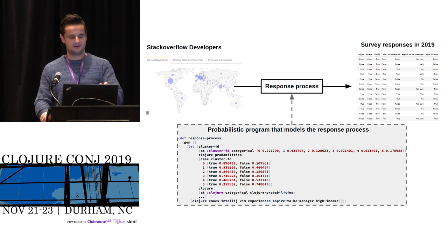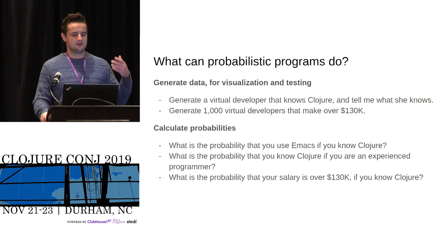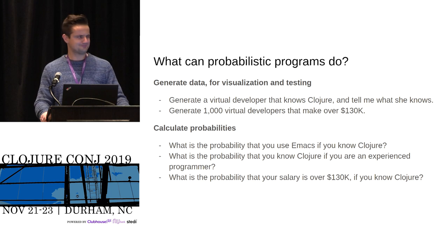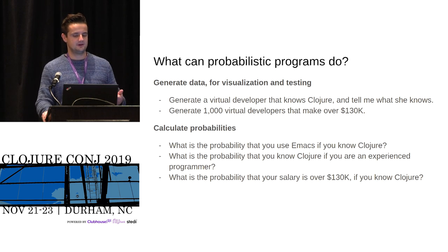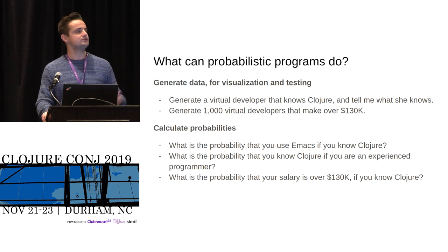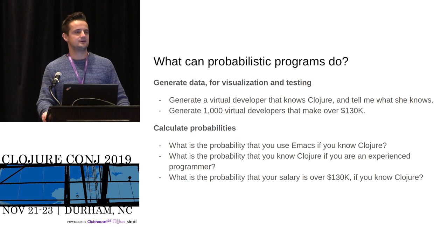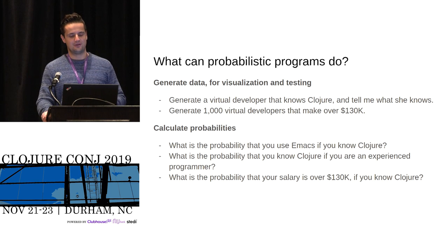We want to write a program in Clojure that models this process. Once you have that program, you can do interesting things with it. For example, you could use the program to generate data for visualization and testing purposes — ask it to generate one new developer that knows Clojure and check what the other column values are. You can also generate a distribution of 1,000 developers, tell the system to only generate developers that make over 130K, then look at the other columns and draw inferences.